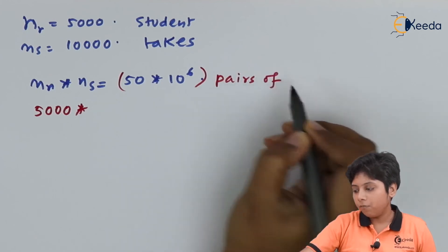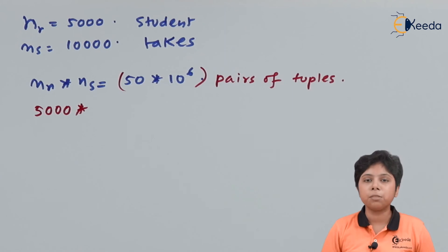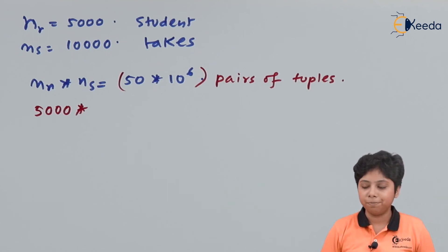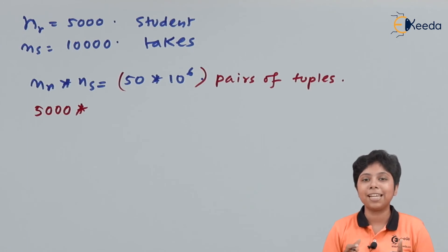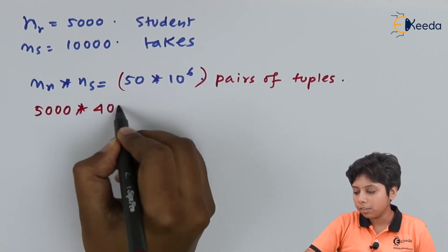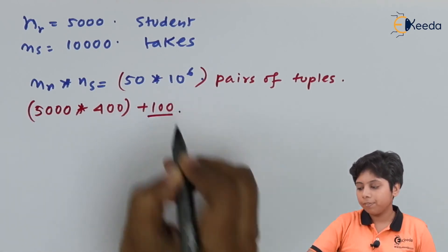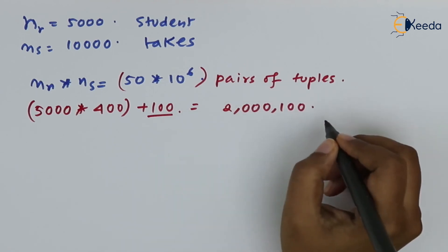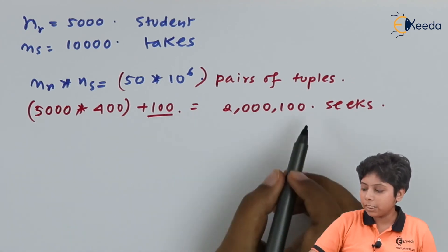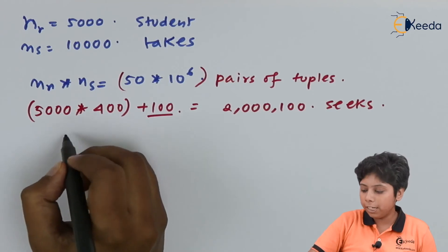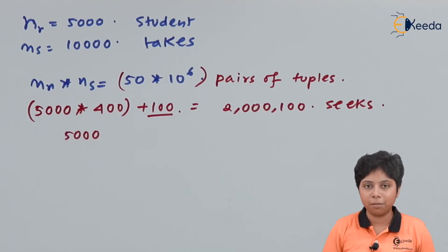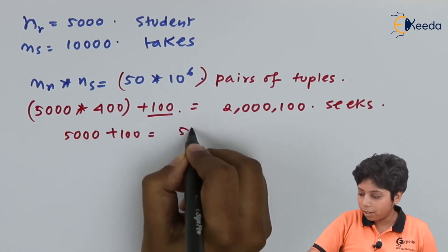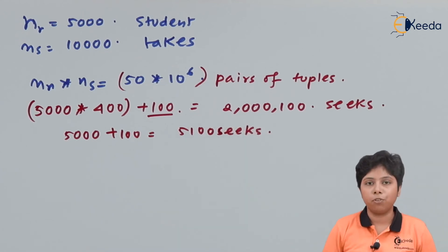After forming 15 times 10 to the power 6 pairs of tuples, the cost for the inner relation is br plus bs times nr, which is 5000 plus 400 plus 100 blocks for bs. For the outer relation we need 5000 as it already stays in memory, plus 100, giving 5100 seeks. All together we will need this many seeks. We can see how the number of seeks grows large with a large number of records in a nested loop join.